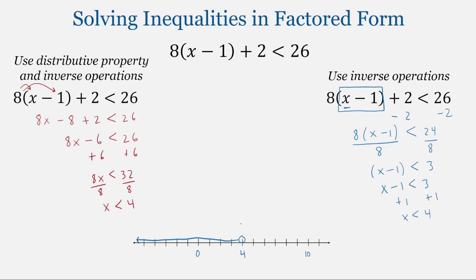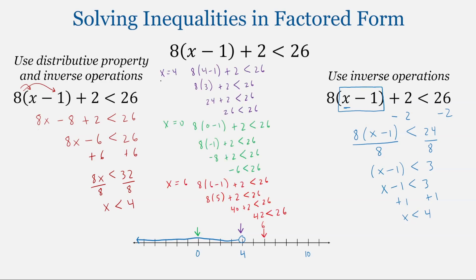We'll go ahead and check a few points. We will check at equality, where the two sides of the inequality are equal to each other. We'll also pick a point within the solution — 0 is always great to test because it often makes the arithmetic easier. And let's pick a point not within the solution, so we'll try 6. Testing at x equal to 4, that's where the two expressions are equal; we end up with 26 less than 26, which is not a true statement, and 4 is not a solution.